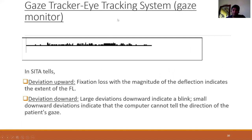The gaze tracker is an optional system not available in all perimeters. It is used to check for fixation losses using the SETA strategy. An upward deviation indicates a fixation loss, with the magnitude of deviation indicating the degree of fixation loss. A large downward deviation indicates a blink, while a small downward deviation indicates the machine could not track the eye. Accuracy is about 1-2 degrees.